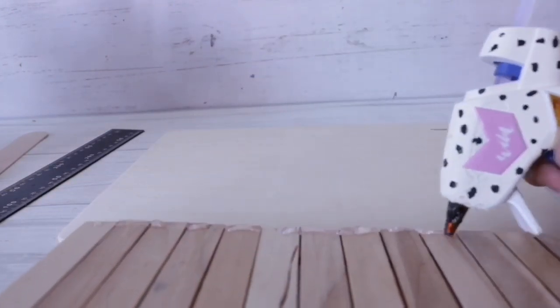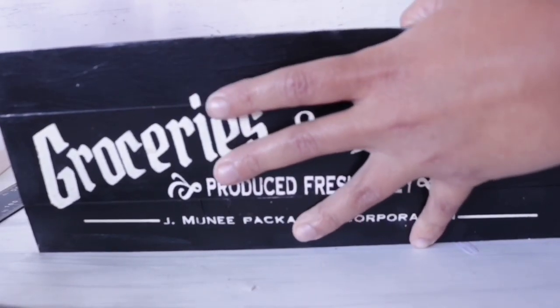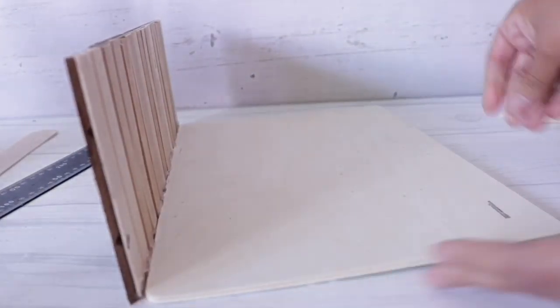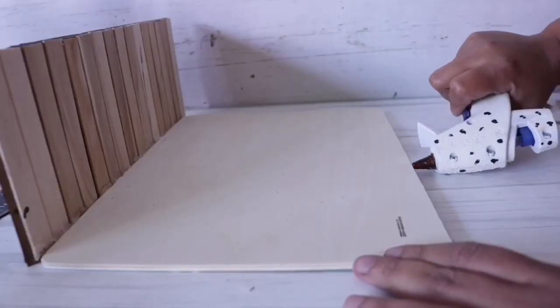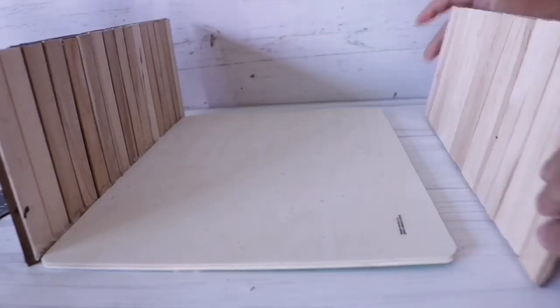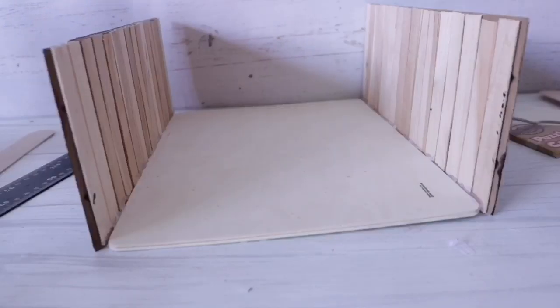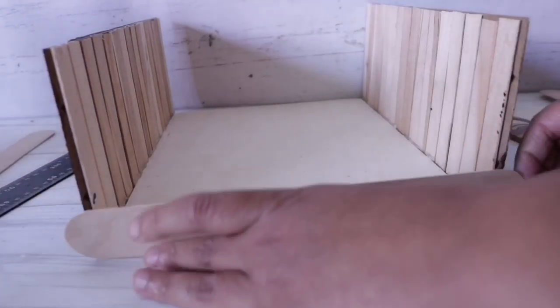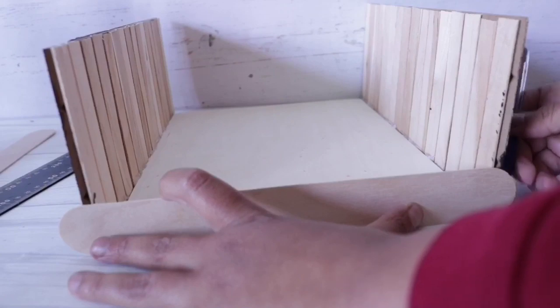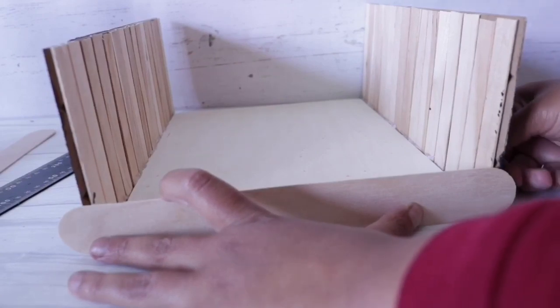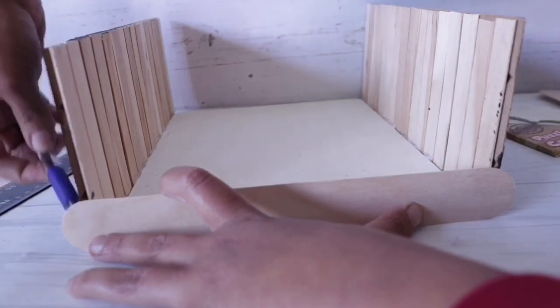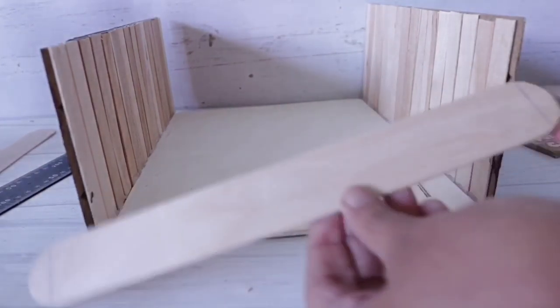To make the bottom piece I'm going to take the Dollar Tree wood puzzles, I love these things, they're nice and sturdy. I went ahead and removed these pieces, you can also E6000 them together. Now I'm just going to bind it using some hot glue. I'm going to press it making sure it is nice and straight. I'm going to do the other side as well.